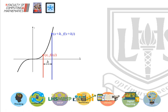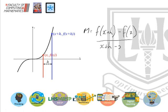So they created a formula for this gradient using a gradient formula: f(x + h) — the y-coordinate of the second point — take away f(x), divided by x + h — the x-coordinate of the second point — take away x, the first one. The x's would cancel, and that gave them a formula to find the gradient.